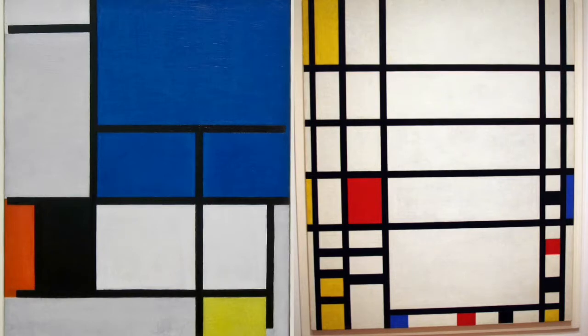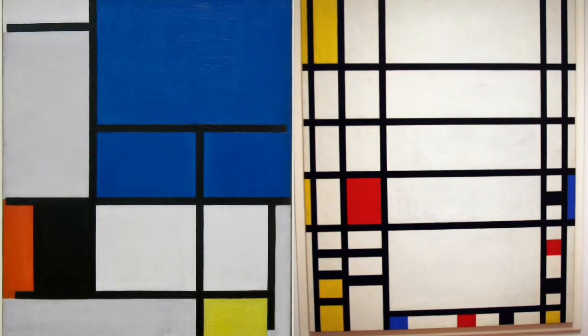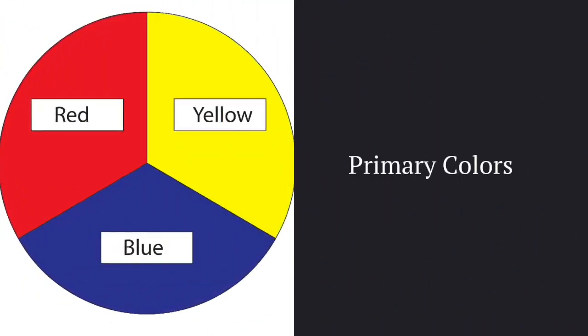Pete Mondrian liked to use just three colors in his artwork. Can you name the three colors? Red, yellow, and blue are called the primary colors.